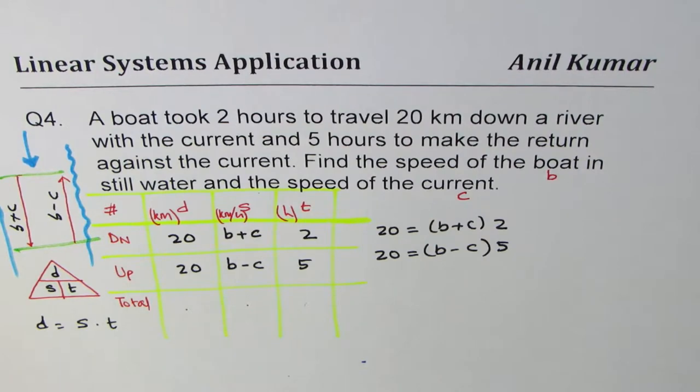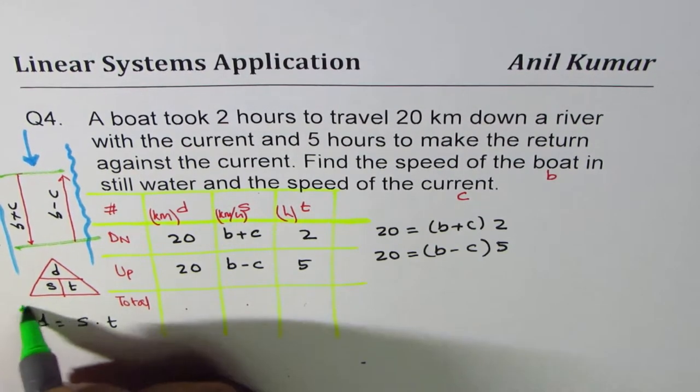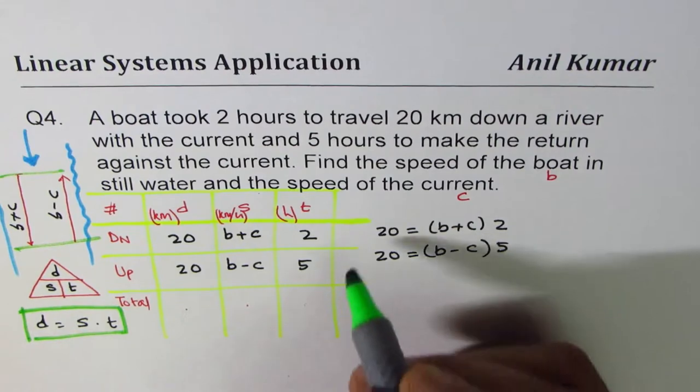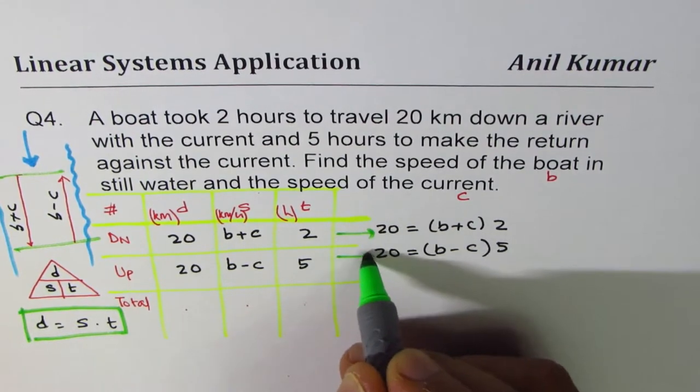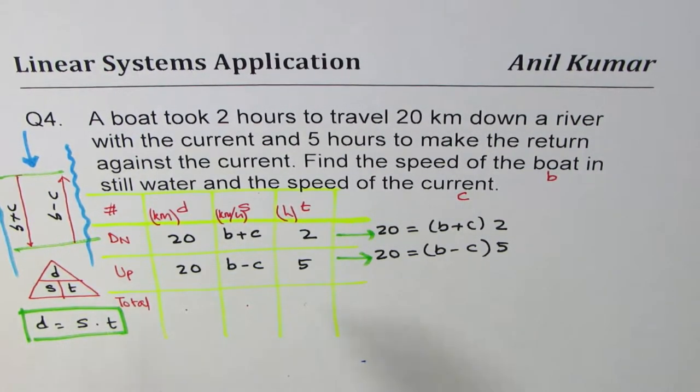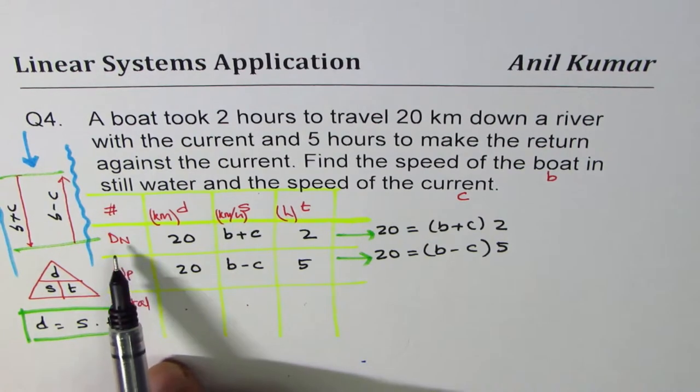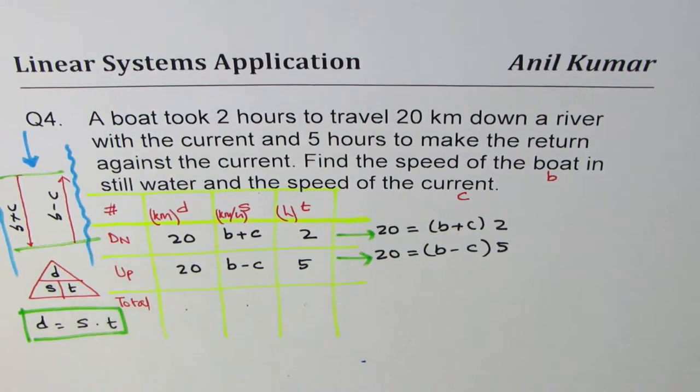And the other one is 20 equals to B minus C times five. So what we did was we applied this particular formula distance speed time and found the two equations relating the data given for down and up movement of the boat.